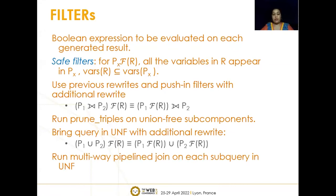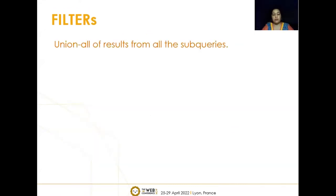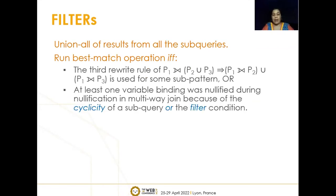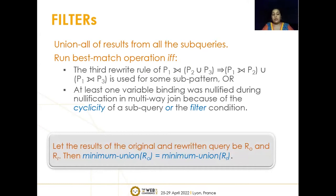After pushing in the filters but without applying other rewrite rules, we run prune triples on each union-free subcomponent of the SPARQL BGP optional union filter query. Then we bring the query into union normal form using all five rewrite rules. We again run multi-way pipeline join on each subquery in UNF, then union all results, and run best match if the third rewrite rule was used or if nullification occurred due to cyclicity or filter conditions. An important observation is that if minimum union is applied to both the original query result and the rewritten query result, they are exactly the same.